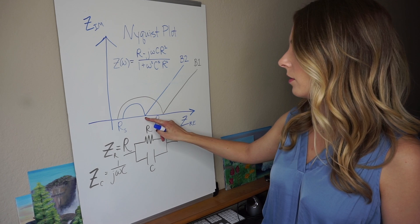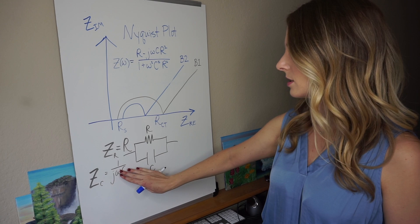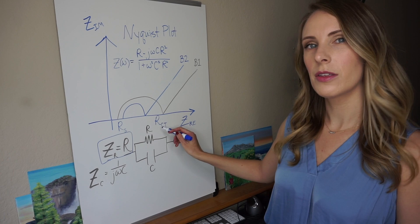Now the important thing to note is that when you have the imaginary term go to zero, so you have this capacitor go to zero, all you have left is R, a resistance.